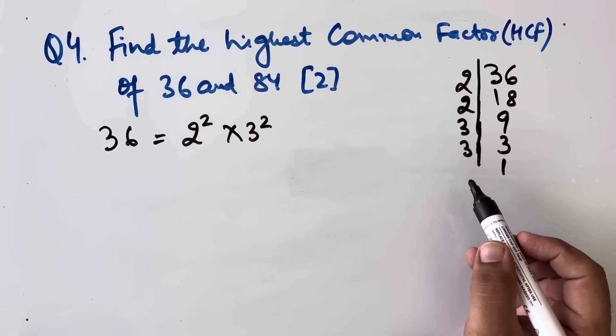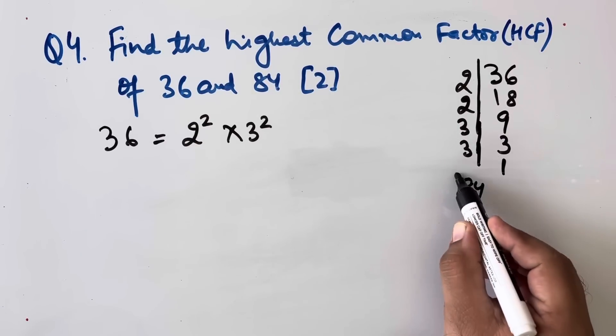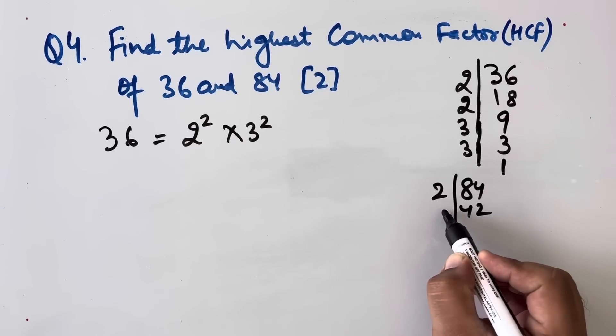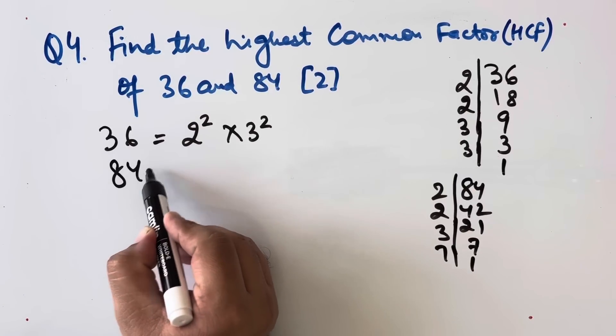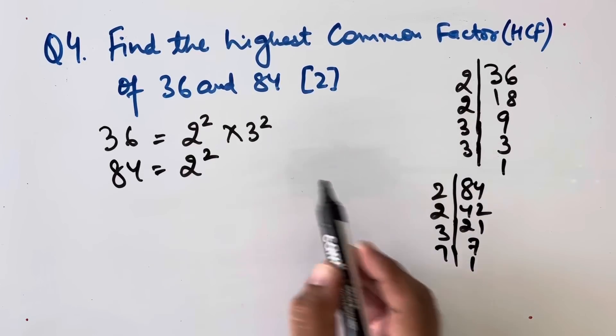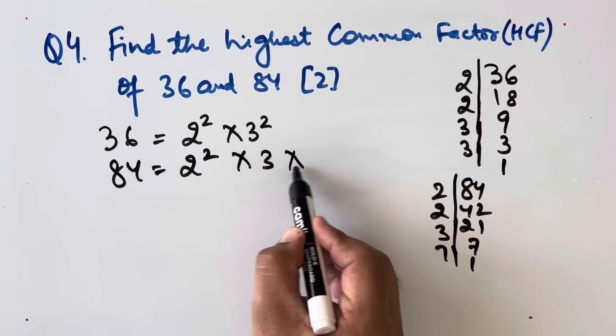Similarly, we can write 84. We get 42, 21, 7 and 1. 84 can be written as 2^2 × 3 × 7.